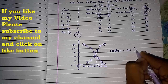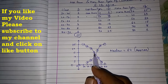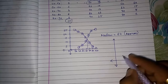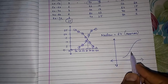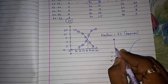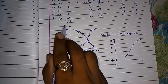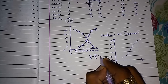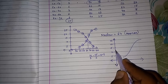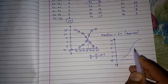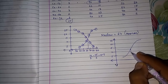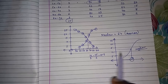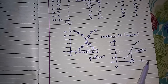Whenever only one graph — less than type or more than type ogive — is there, at that time also you can find the median. The sum of frequencies is 25, so first find n by 2: 25 divided by 2 equals 12.5. Look at 12.5 on the y-axis, draw a horizontal line to where it intersects the ogive, then draw a vertical line down to the x-axis. Where it intersects is your median. This way, with either a single less than or more than type ogive, you can still find the median.